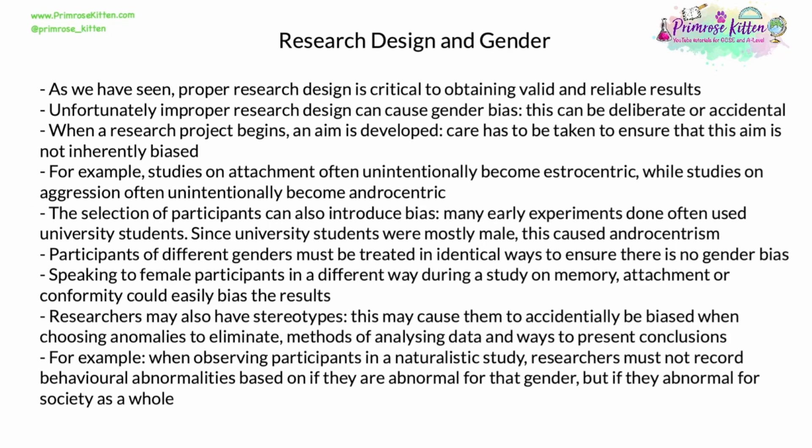Participants of different genders in research must be treated in identical ways, as much as is practically possible, to ensure there is no gender bias. Speaking to female participants differently during a study on memory, attachment, or conformity, for example, could very easily bias the results. Researchers themselves may also have pre-existing social or cultural stereotypes. While not deliberate, this might cause them to accidentally introduce bias when choosing anomalies to eliminate, or when analysing data and presenting conclusions. For example, when observing participants in a naturalistic study, researchers must not record behavioural abnormalities based on whether they are abnormal for that gender, but whether they are abnormal for society as a whole — eliminating gender bias.